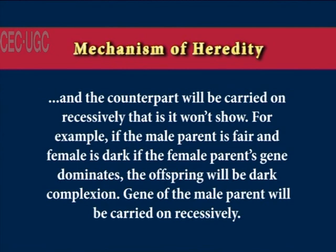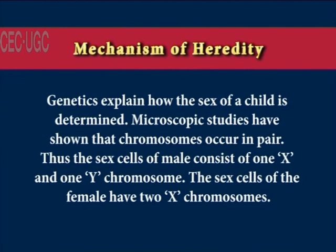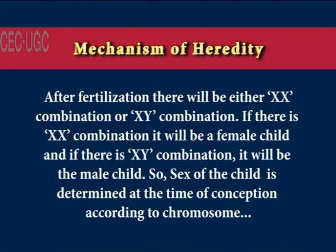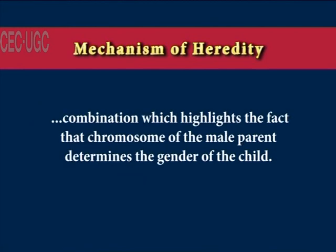For example, if the male parent is fair and the female is dark, and if the female parent's gene dominates, the offspring will have dark complexion and the male parent's gene will be carried recessively. Genetics explains how the sex of a child is determined. Microscopic studies show that chromosomes occur in pairs: the sex cells of the male consist of one X and one Y chromosome, while the sex cells of the female have two X chromosomes. After fertilization, there will be either an XX combination or an XY combination — XX results in a female child and XY results in a male child. So the sex of the child is determined at the time of conception by the chromosome of the male parent.